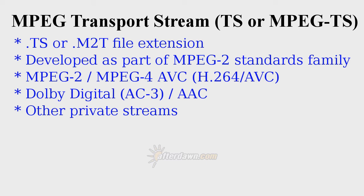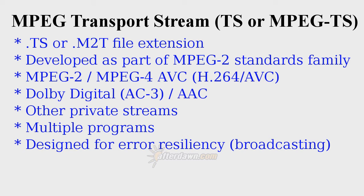Another notable difference between the transport and program stream containers is the ability to hold multiple video programs. A program is similar to a program stream, except that in keeping with the goal of error resilience, it adds more information for maintaining sync with other streams when they are corrupt or incomplete. Multiple programs are combined primarily to allow the transmission of multiple TV channels in one signal. With all these features, you might think transport streams are the best container to use for all your multimedia files, but there are some downsides as well. All the additional error correction information makes a TS file bigger than a program stream containing the same elementary streams.